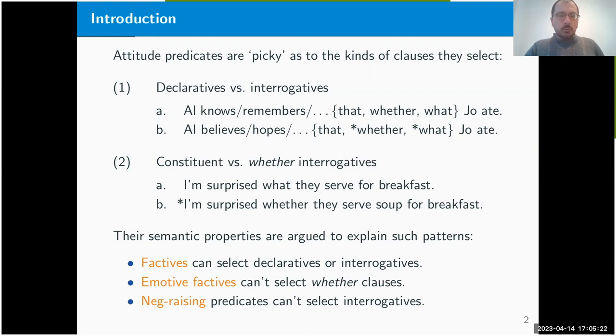What's been proposed in the literature is that these kinds of patterns can be explained by appealing to the semantic properties of these attitude predicates. Properties like factivity explain declarative and interrogative selection, emotive factivity explains the inability to combine with whether complements, and so forth.